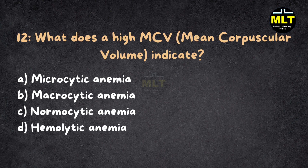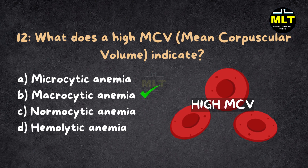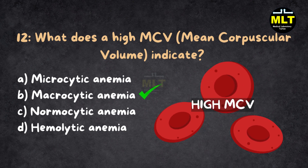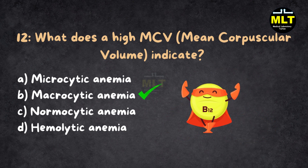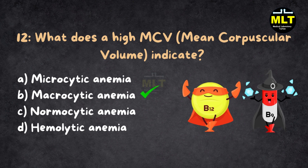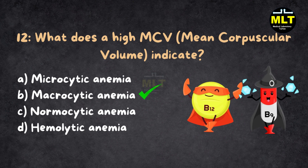Correct answer: B. Macrocytic anemia. Explanation: A high MCV indicates larger than normal RBCs, commonly seen in vitamin B12 or folate deficiency.